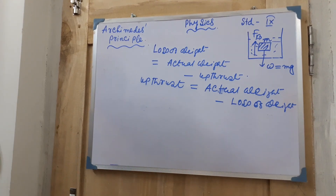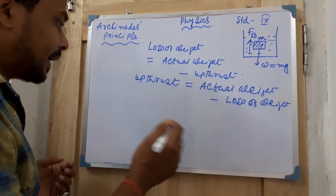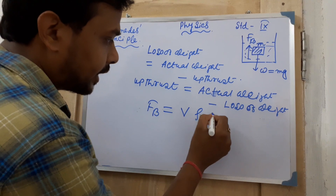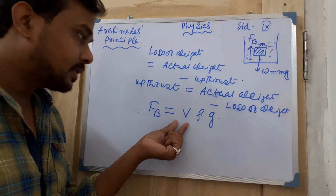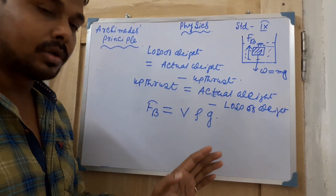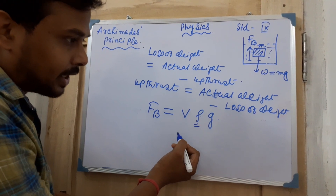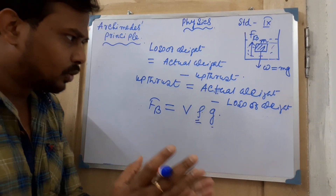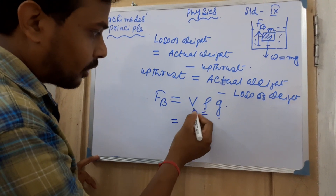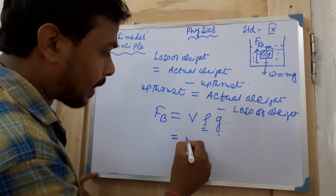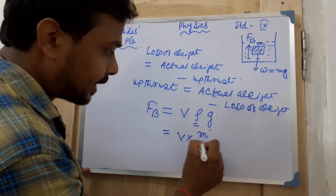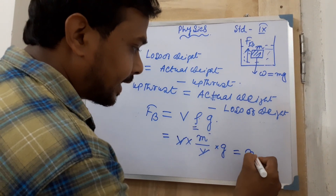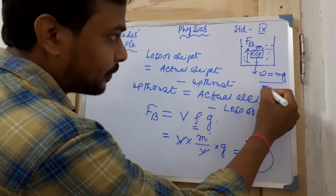This is the Archimedes principle in simple mathematical form. The upthrust is equal to V×ρ×g, where V is the volume of the liquid displaced, ρ is the density of the liquid, and g is gravity. Since density = mass/volume, the volumes cancel out and you get M×g.